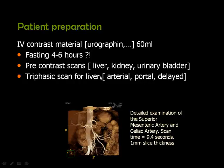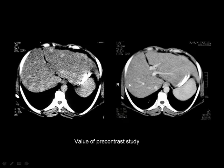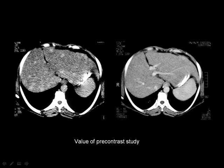We improve examination quality by taking pre-contrast scans before injecting contrast material. The reason is demonstrated by these two abdominal images: on the post-contrast image you cannot see any pathology in the liver, but on the non-contrast image you can see multiple lesions. The explanation is that if you inject contrast, the lesion and the liver parenchyma may enhance equally, making the lesion invisible. So we perform a pre-contrast study of the liver to look for lesions that may enhance exactly like the liver parenchyma.